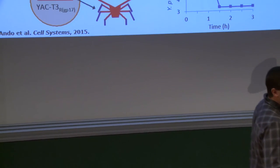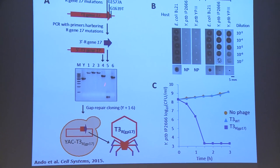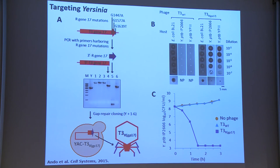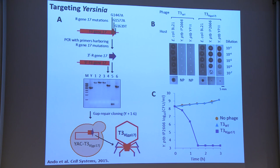We then wanted to see if we could cross species barriers. We used a completely synthetic approach: phage R, which infects Yersinia, only has three-point mutations difference from the T3 gene 17 tail fiber sequence. So instead of sourcing the whole GP17 gene, we ordered a synthetic DNA fragment corresponding to that mutated region, went through the same assembly process to make a T3 phage with the R C-terminus tail fiber, and found that while T3 does not grow on Yersinia, T3R grows perfectly fine on Yersinia and kills it extremely efficiently in vitro.